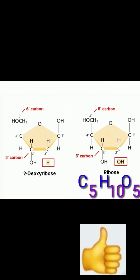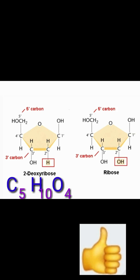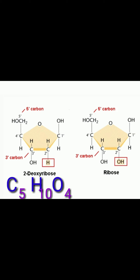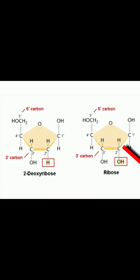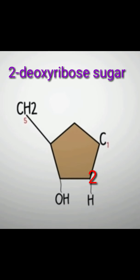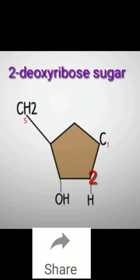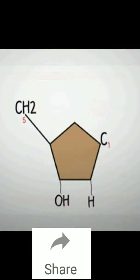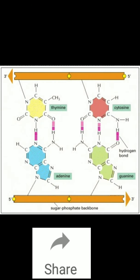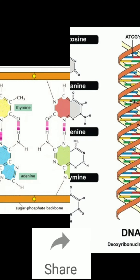Deoxyribose is a pentose sugar. Ribose becomes deoxyribose sugar with removal of an oxygen atom from the hydroxyl group at the second carbon of the ring structure of ribose sugar. This ring structure of deoxyribose sugar, with the absence of one hydroxyl group, becomes more stable and less degradable.